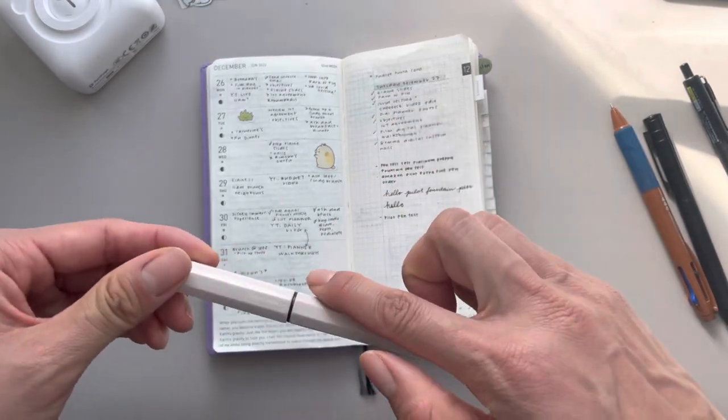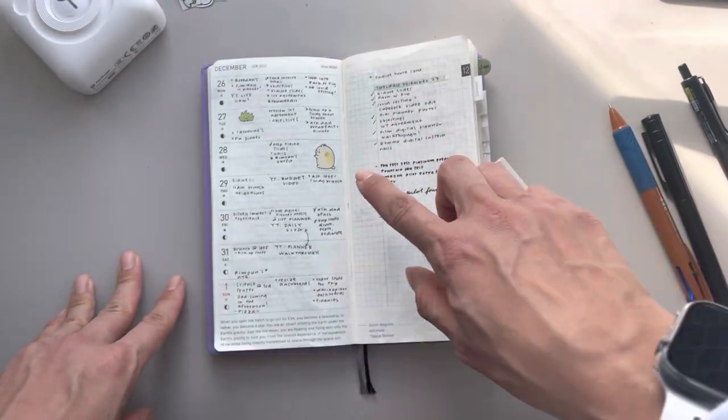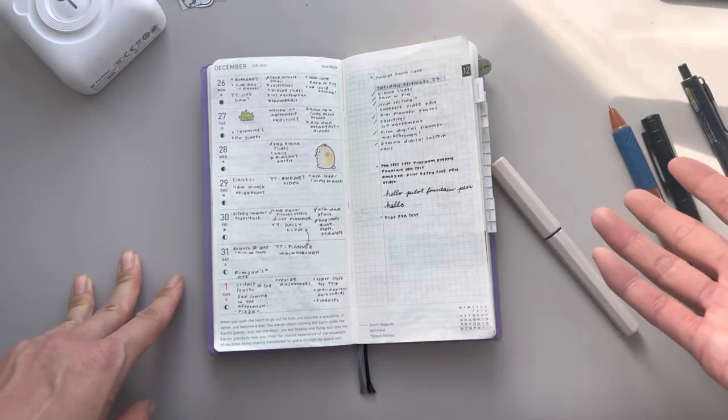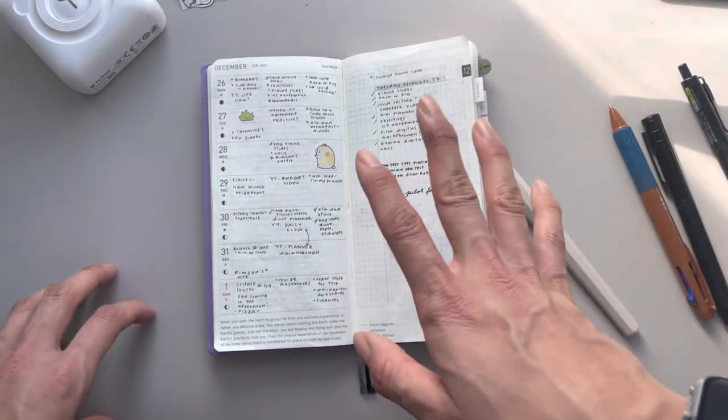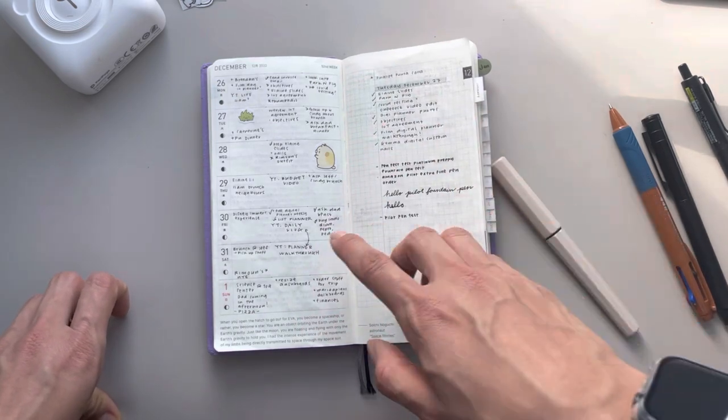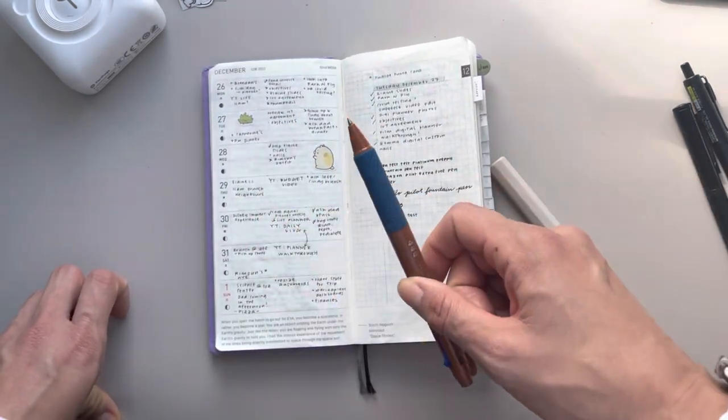So for me, I find this Platinum Preppy pen actually quite smooth despite the price point. But what do I know about fountain pens because I'm a complete noob. But I really do like this. But what I didn't like is that this fine tip was actually really bold. I don't know if my writing is ugly or what, but it just seems too bold for me, especially when I was coming from this one.